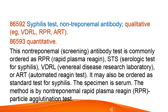Syphilis test, non-treponemal antibody, qualitative, e.g., VDRL, RPR, ART. Quantitative. This non-treponemal screening antibody test is commonly ordered as RPR, rapid plasma reagent, STS, serologic test for syphilis, VDRL, venereal disease research laboratory, or ART, automated reagent test. It may also be ordered as standard test for syphilis. The specimen is serum. The method is by non-treponemal rapid plasma reagent, RPR, particle agglutination test.